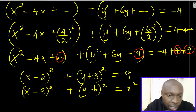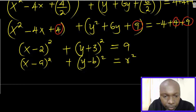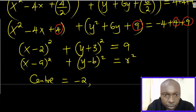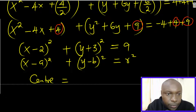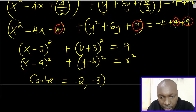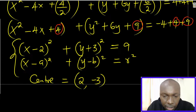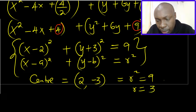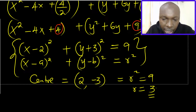Comparing with the standard equation x minus a squared plus y minus b squared equals r squared, the center is now clear. From x minus 2: negative a equals negative 2, so a equals 2. From y plus 3: negative b equals 3, so b equals negative 3. The center is therefore (2, negative 3). And r squared equals 9, so r equals 3 — the radius is 3 units.